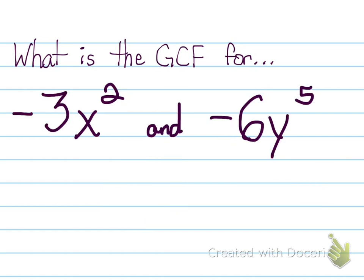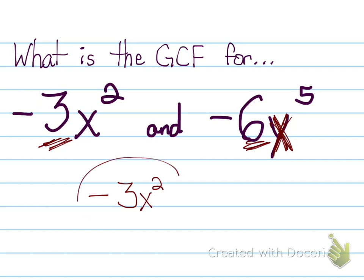Now when you have something like negative three x squared and negative six x to the fifth, you're finding the GCF in two separate ways — first focus on the numbers, then the variables. Between negative three and negative six, my GCF for the numbers is negative three. Between x squared and x to the fifth, the smallest exponent is x squared. So therefore my GCF will be negative three x squared.